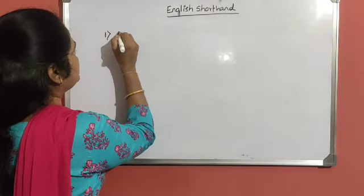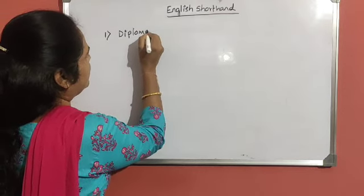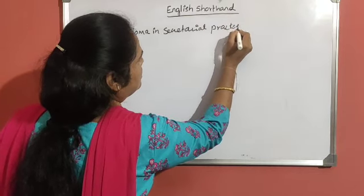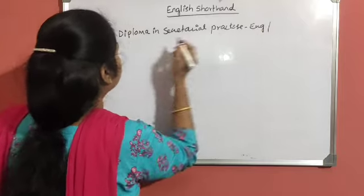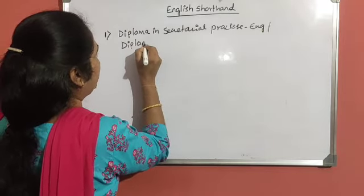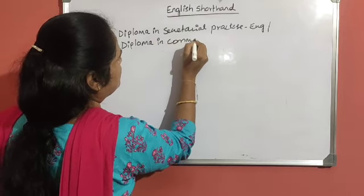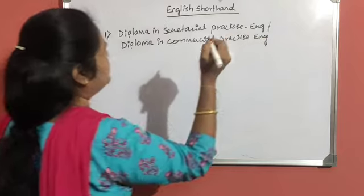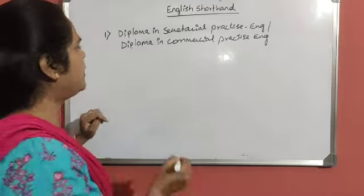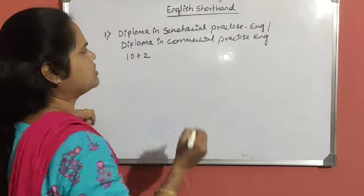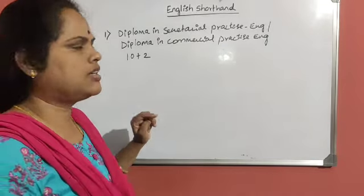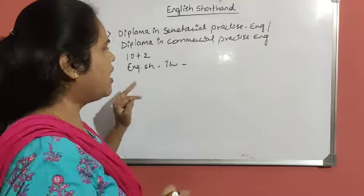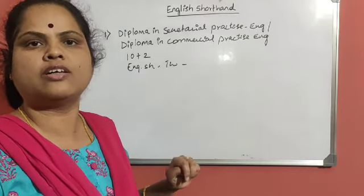The first way is you can join for Diploma in Secretarial Practice English, also called Diploma in Commercial Practice. This is a three-year course. The minimum education qualification is 10 plus 2. In this course, English Shorthand and Typewriting are the main subjects, and along with these you will also have to learn commerce subjects.